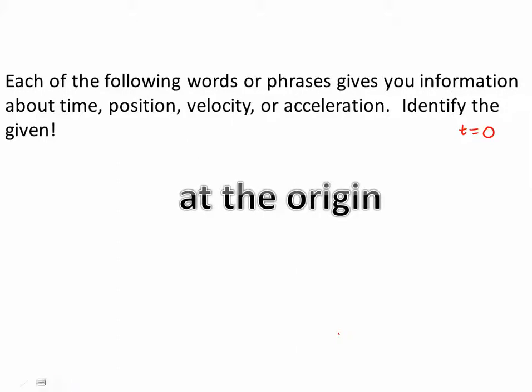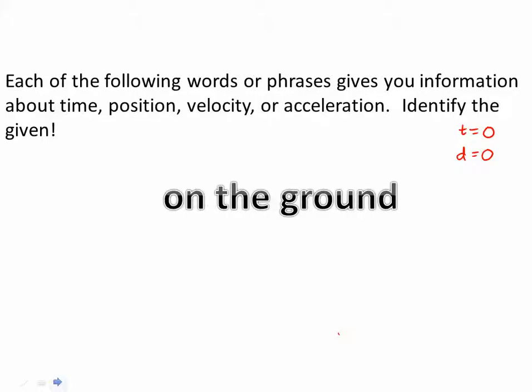At the origin. 'At the origin' means that displacement is zero. Remember, when we talk about displacement or position, we're talking about the displacement from the origin. And so if we are at the origin, the displacement or the distance from the origin is zero.